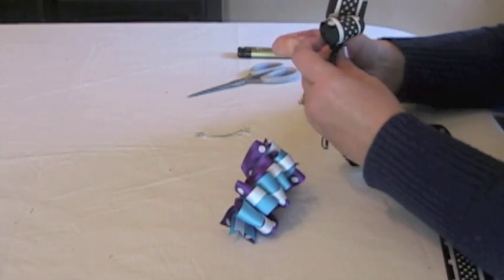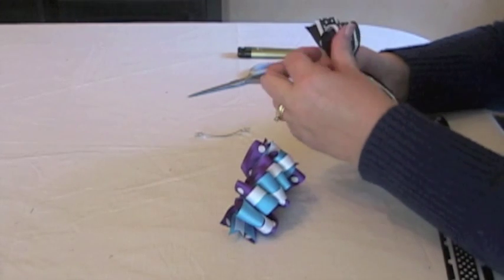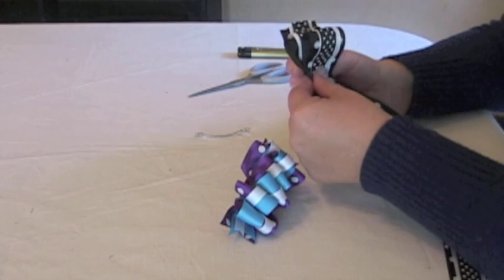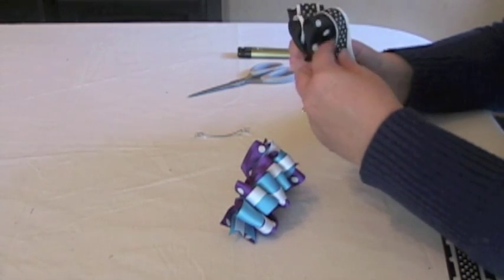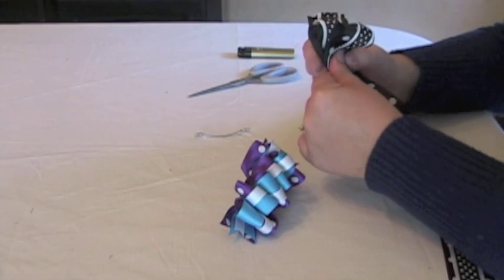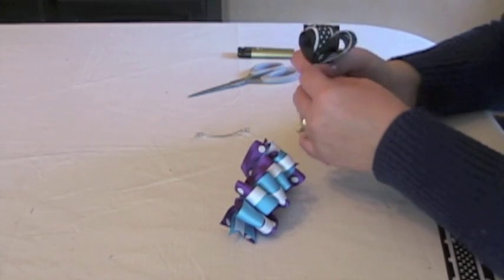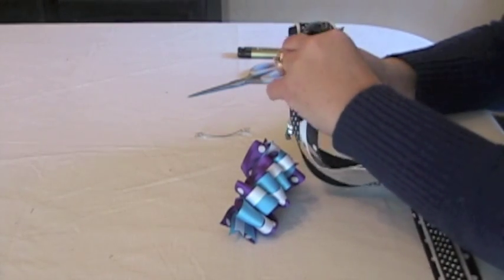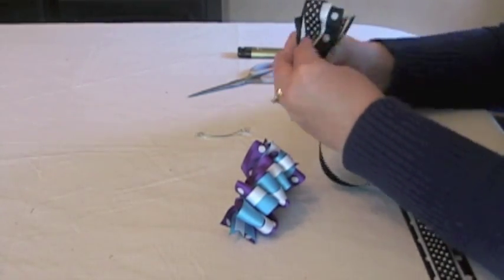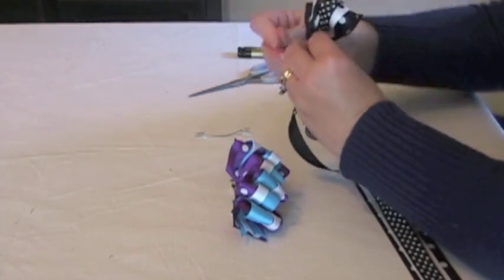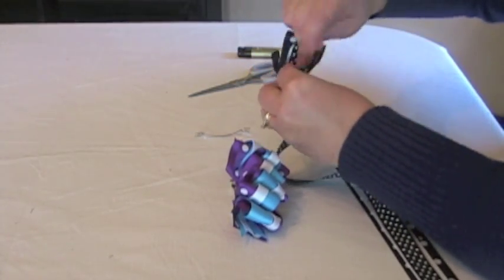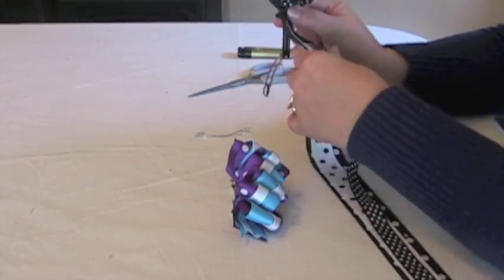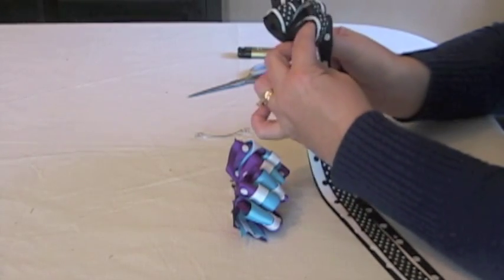You can use floss too, if you don't want to use the floral wire. You just keep doing that, you keep gathering about 2 inches worth of the ribbon, pinching it together, and wrapping it around the clip until you've used all your ribbon, or as much as the clip will hold.